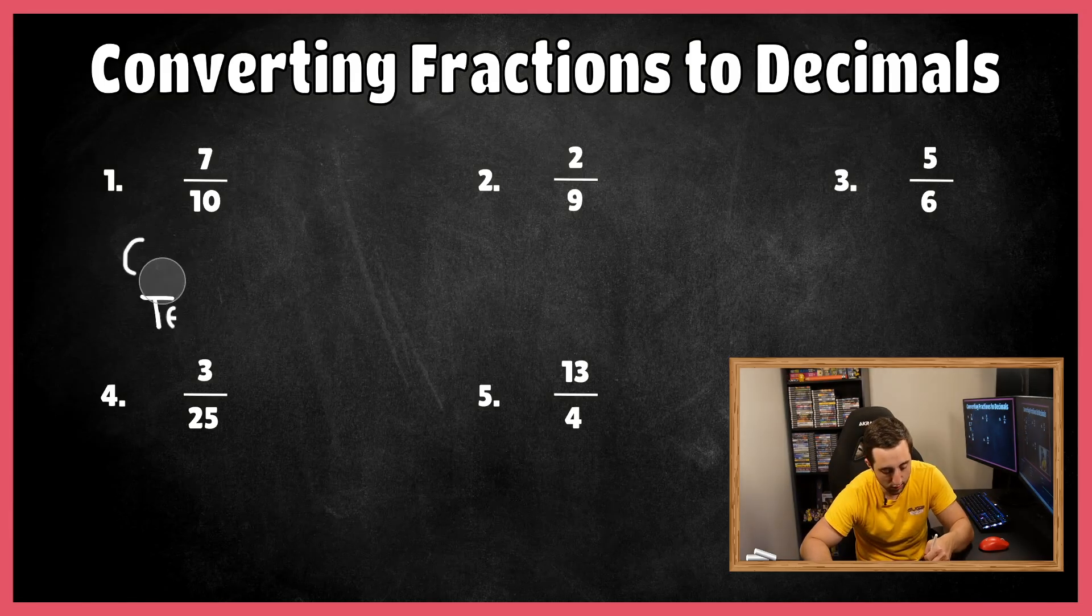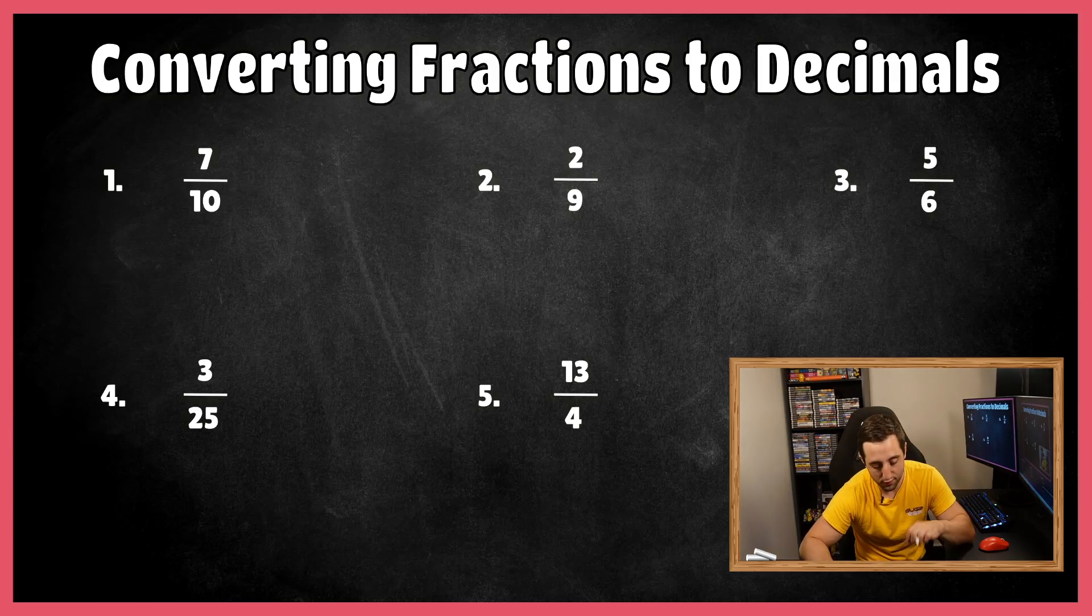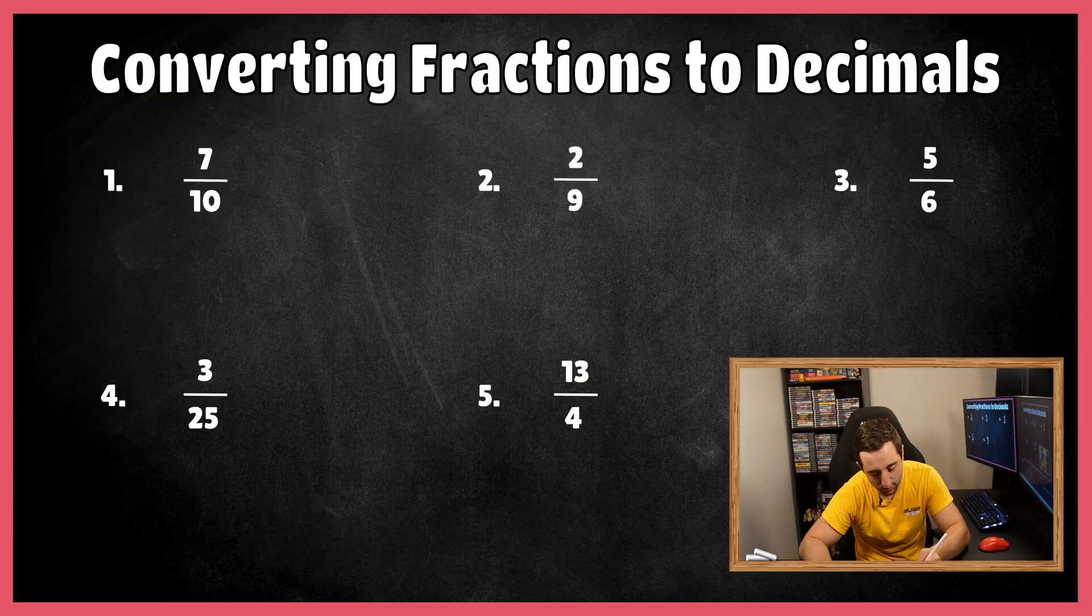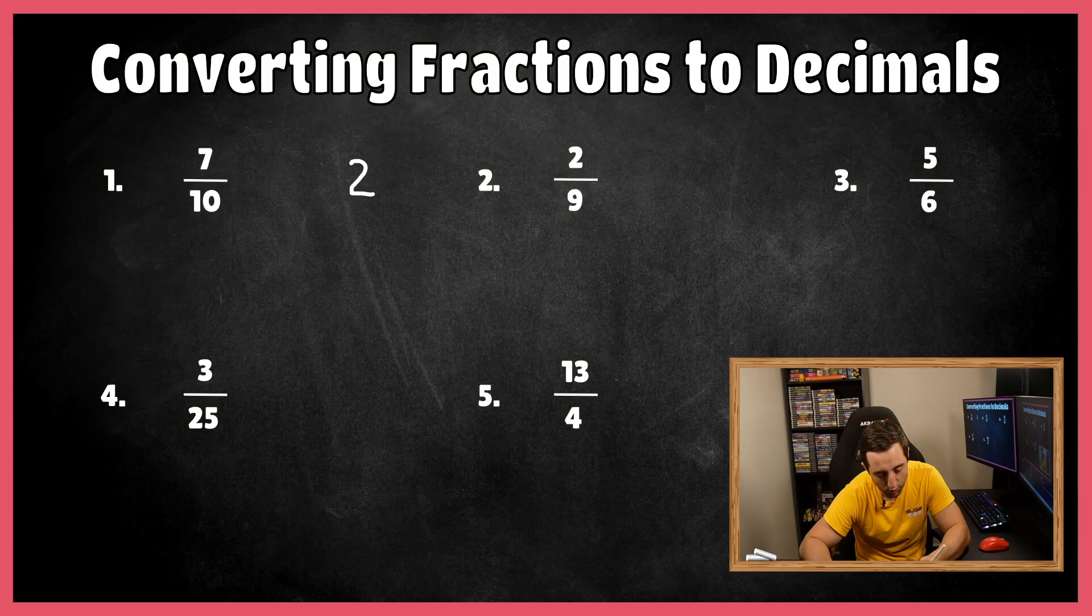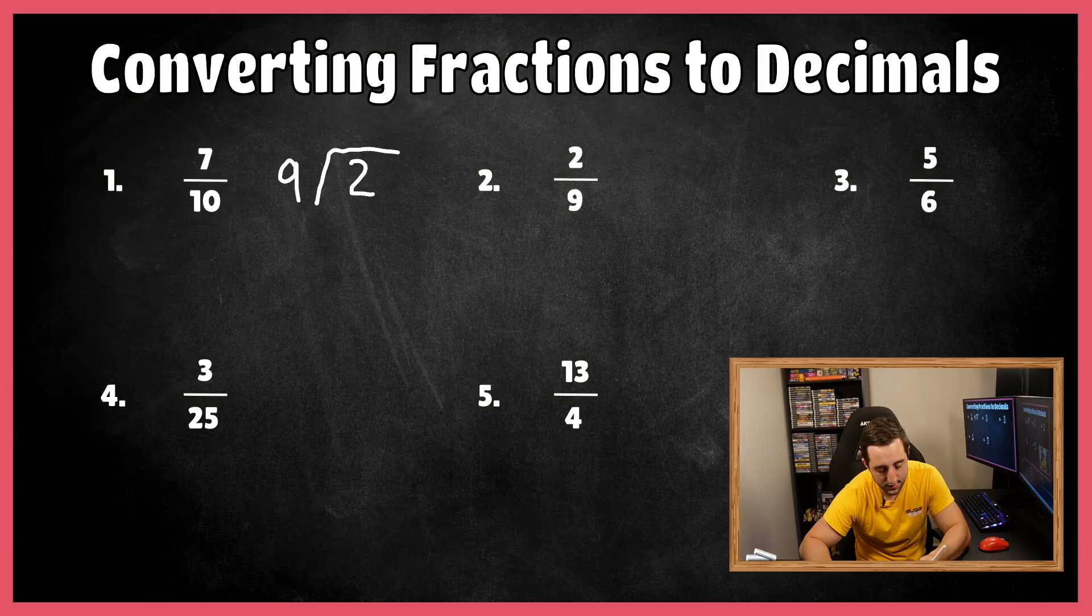Okay, let's go ahead and jump into number two. I'm just going to erase this because I'm going to write all over the place. So don't expect me to write in the place where the question is. For two ninths, again, two is our dividend. Nine is our divisor. So I'm just going to write it over here. So two on the inside, dividend. Nine on the outside, divisor.